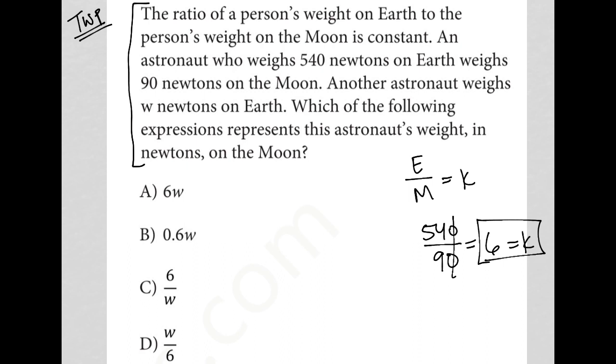And remember, we're told this is a constant so it can't change. Another astronaut weighs W newtons on earth, so we have W in the numerator. Which of the following expressions represents this astronaut's weight in newtons on the moon? So we don't know the weight on the moon, but we do know that the constant value is six.